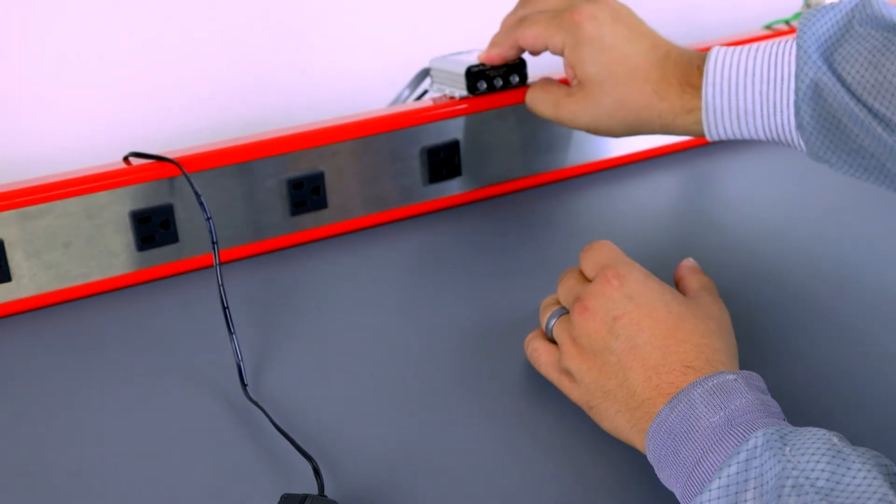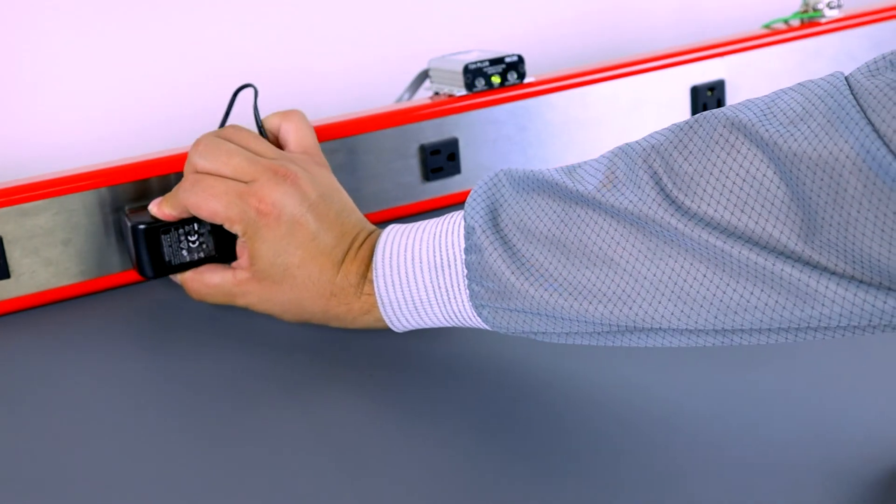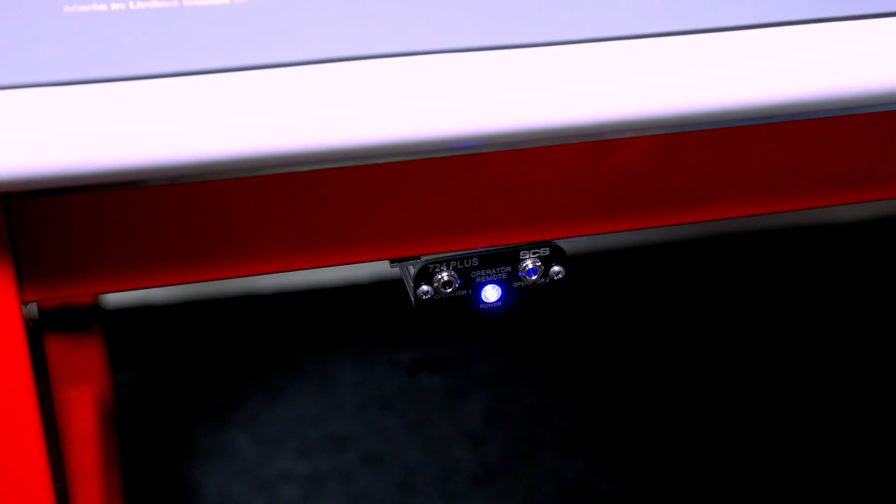If everything is wired and operating correctly, the blue light on the operator remote will illuminate and the mat light on the 724 Plus Monitor will illuminate green.